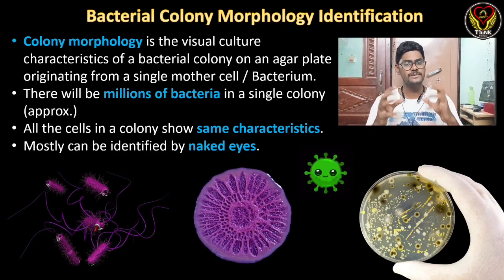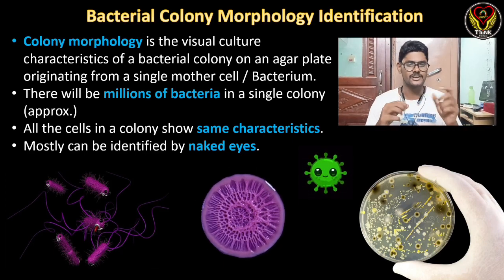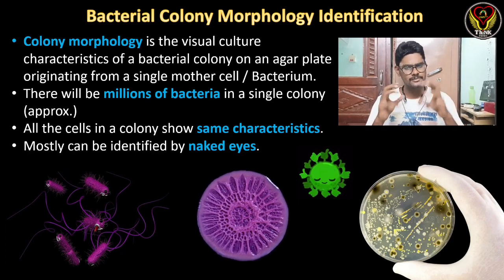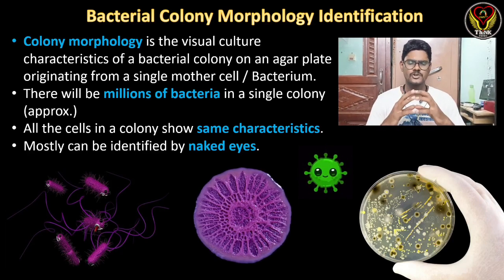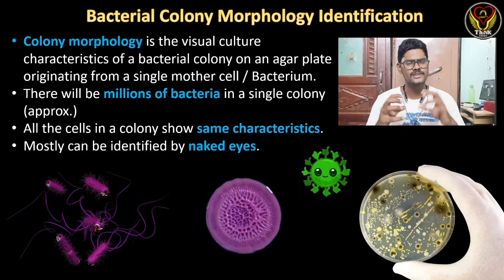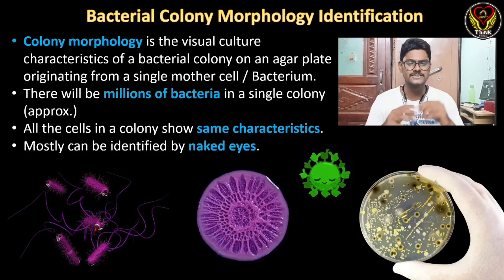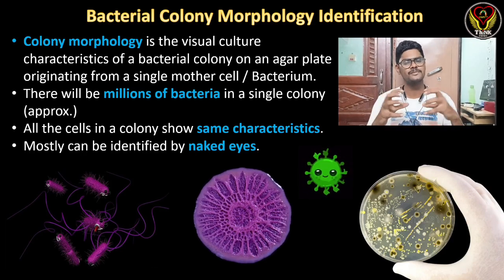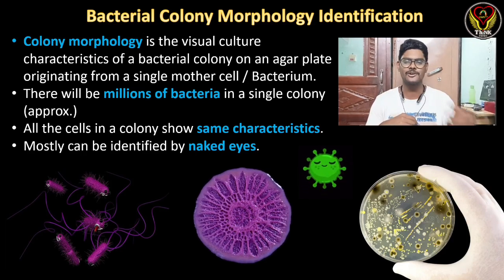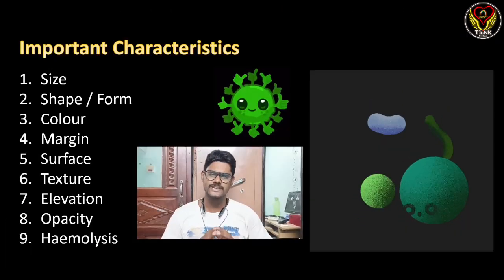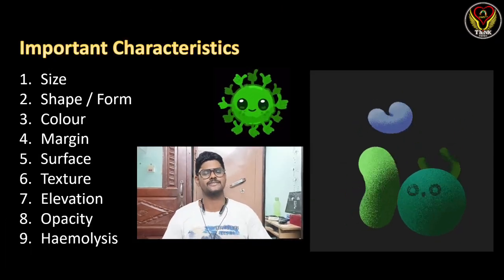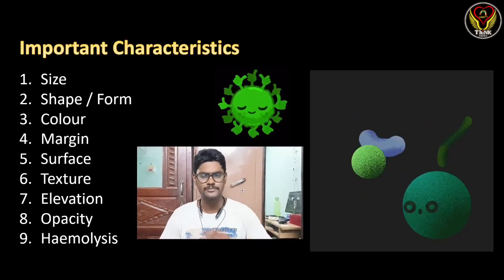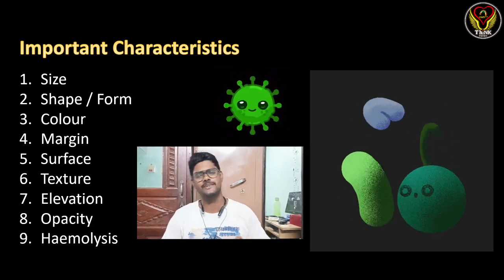There will be millions of bacteria in a single colony approximately, and if we pick a colony, all the bacteria in that colony will have the same characteristics. There are a lot of colony morphology parameters, but the most important nine parameters are: size, shape or form, color, margin, surface, texture, elevation, opacity, and hemolysis.